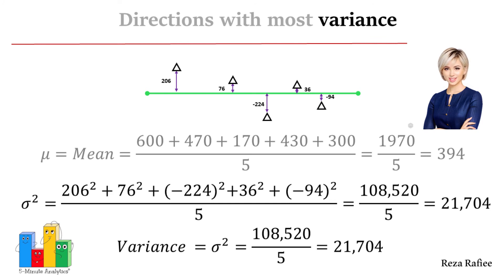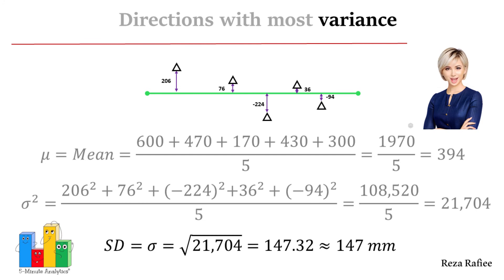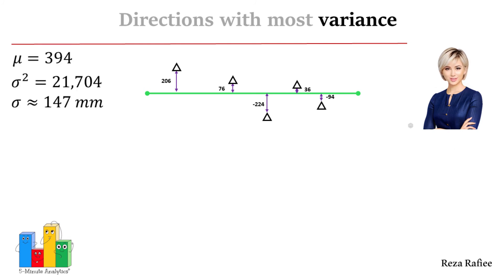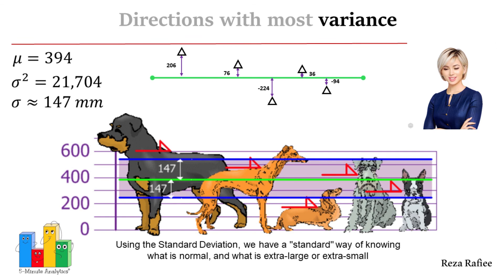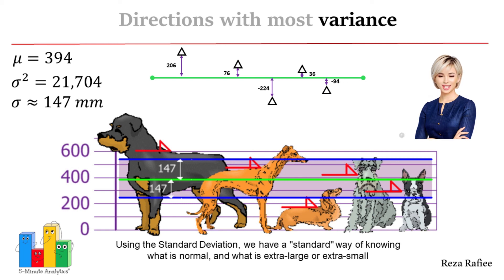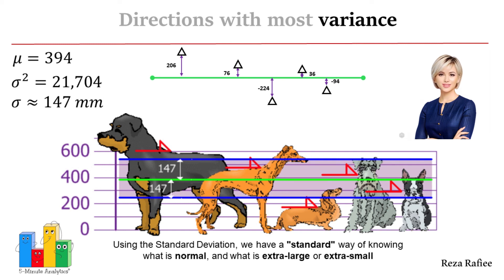The standard deviation is a related measure that helps us understand the typical distance between each dog's height and the average height. It is found by taking the square root of the variance. Essentially, the standard deviation gives us a more easily interpretable measure of how much the individual heights vary from the average. By using the standard deviation, we have a standard way of knowing what is normal and what is extra large or extra small.